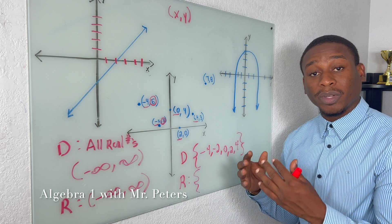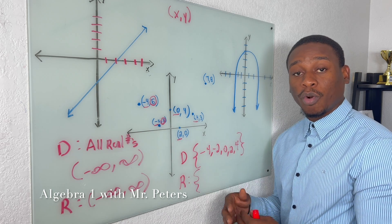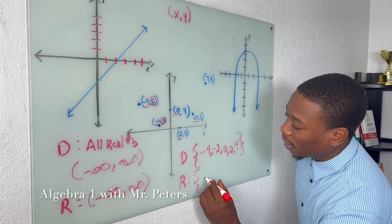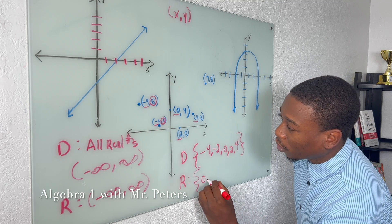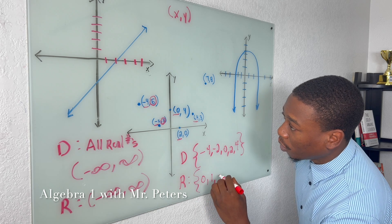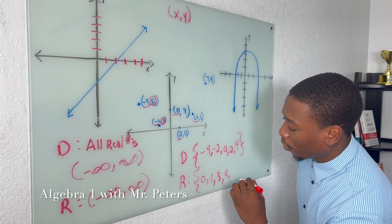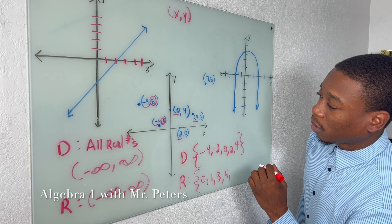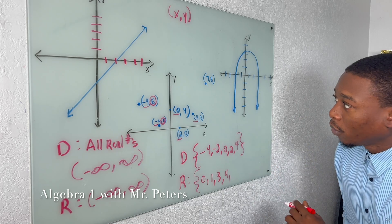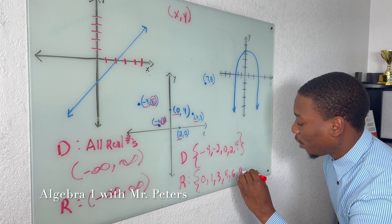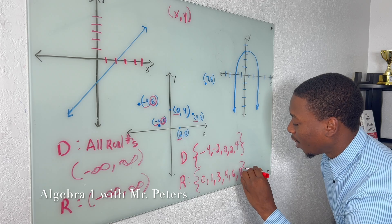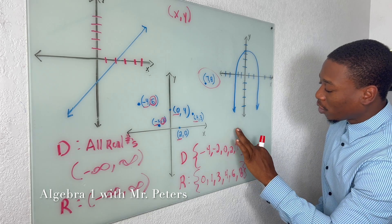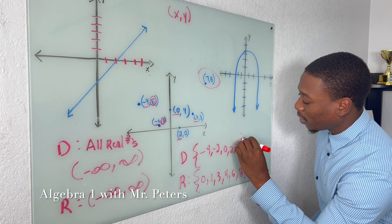Then we go back to the range. The range is the same exact thing, but now we're looking at the second number in the ordered pair. Do it from least to greatest — and if the numbers repeat, meaning the Y value shows up more than once, only write it one time. So when we go to our Y's, we're going to have 0, 1, 3, 4, 6, and 8. Actually, double check — I left out a point, so the domain would actually stop at 7.